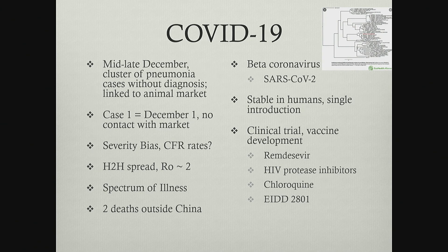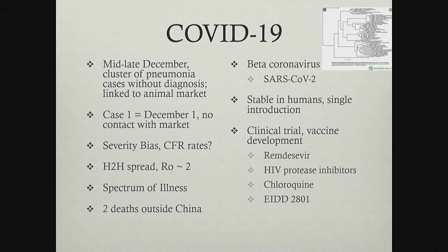The World Health Organization was notified in late December, so this really had a major head start even from the outset. What we saw initially was data with people dying. But even now, when you see some of this data, there's something called a severity bias — they are not testing people with mild illness, so you are seeing people who are going to hospitals and healthcare facilities. That's going to skew your case fatality ratio towards the more severe. Even if you look at the 15 cases in the United States, they are all very mild. So just interpret those case fatality ratios with that in mind.